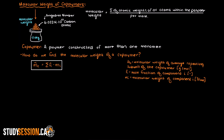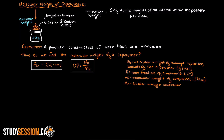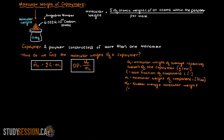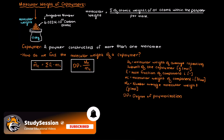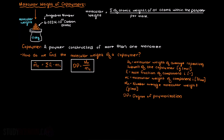If we remember back to the degree of polymerization, we have the following formula. This states that the degree of polymerization is equal to the number average molecular weight component divided by the molecular weight of the repeating monomer. When also applying this formula to copolymers, we replace m with mc, like so.